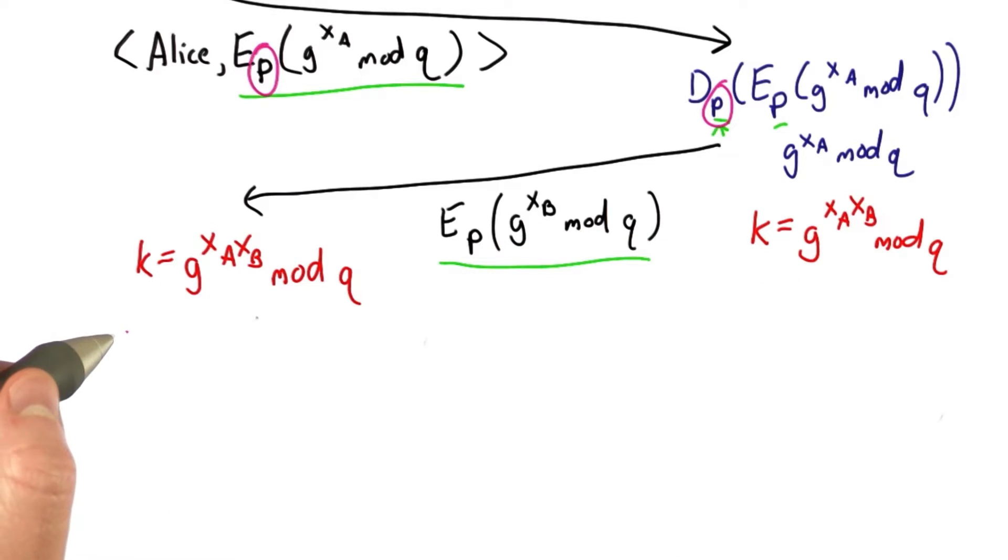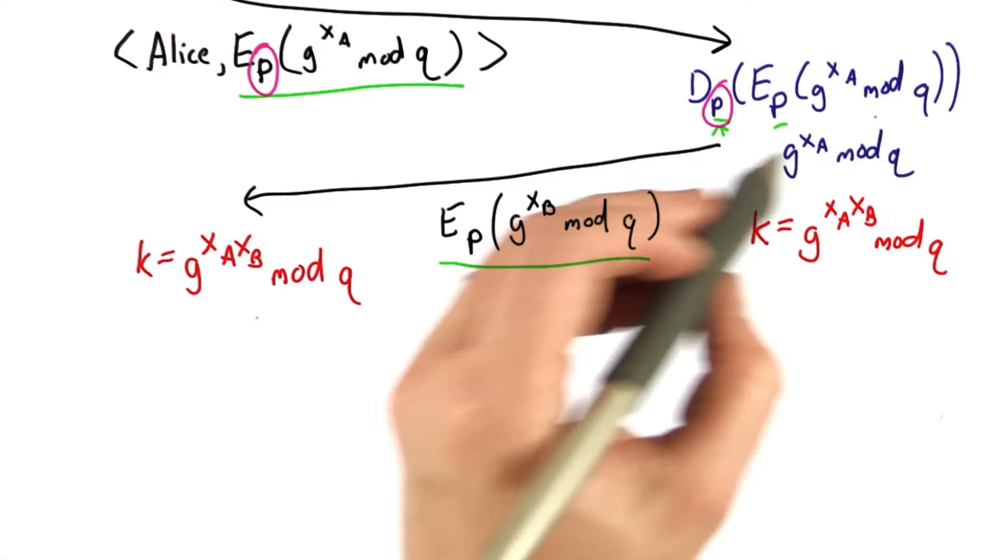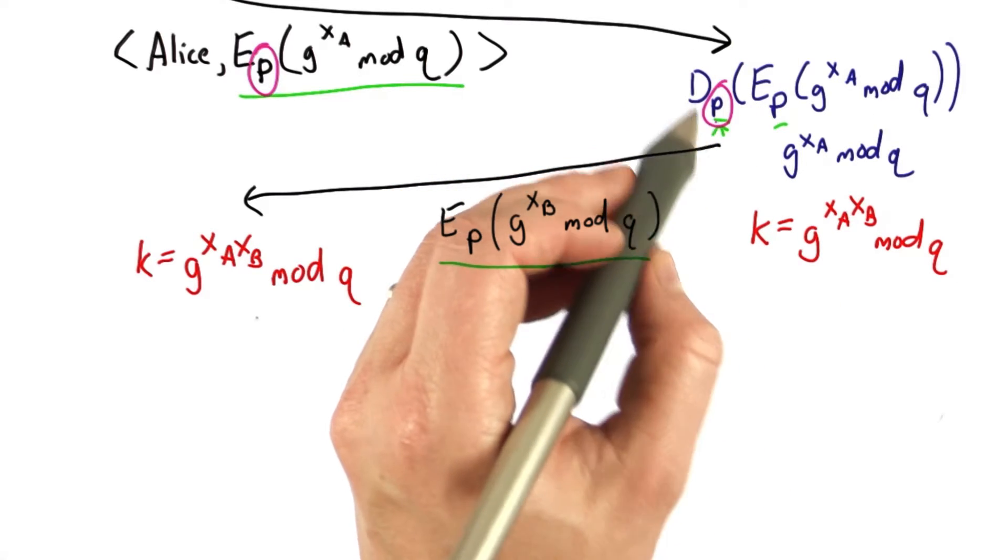What we want to prove is that both parties obtain the same key. For the server to obtain the key, it needed to be able to decrypt this message using the password.